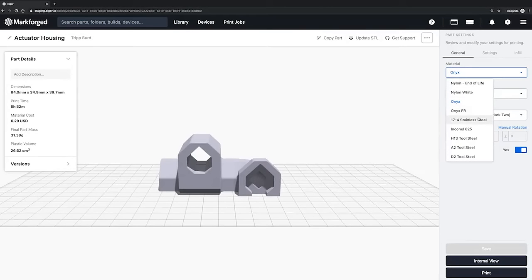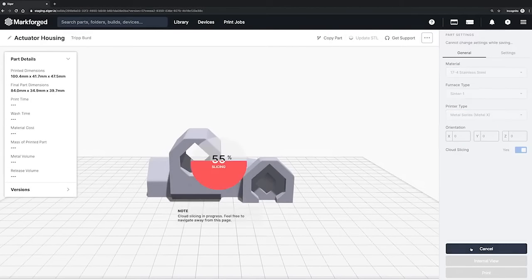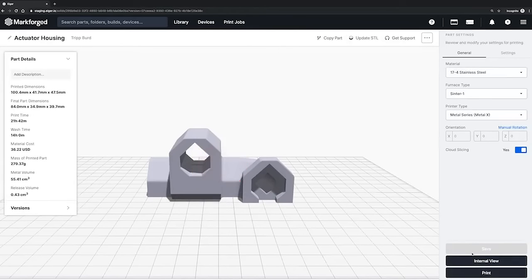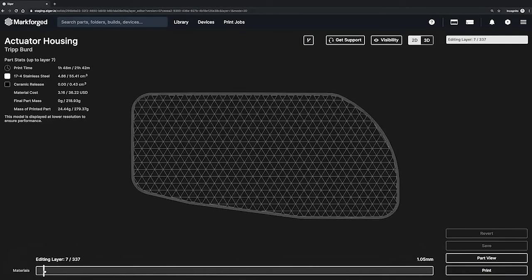When your part slices for metal 3D printing, it gets scaled up to account for shrink and deformation in the downstream processes. It then slices your part into discrete layers and identifies overhang features and builds supports and a raft underneath your part.